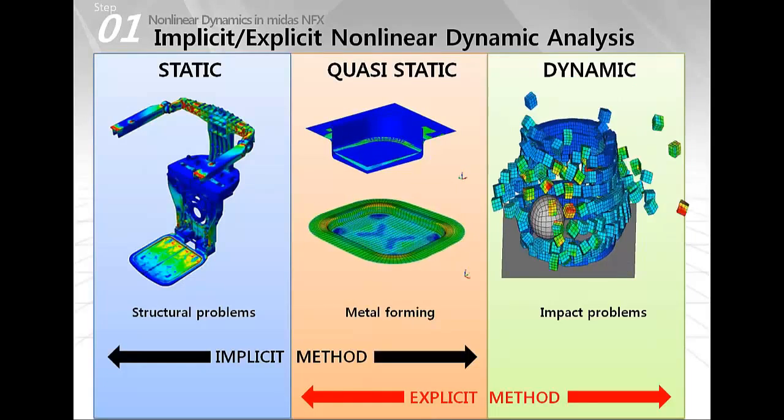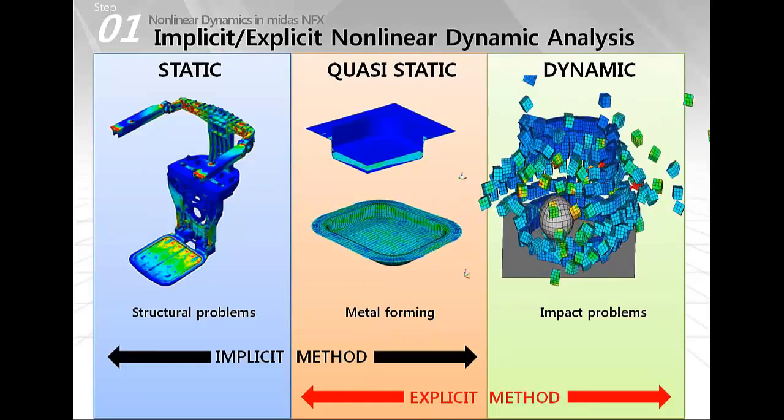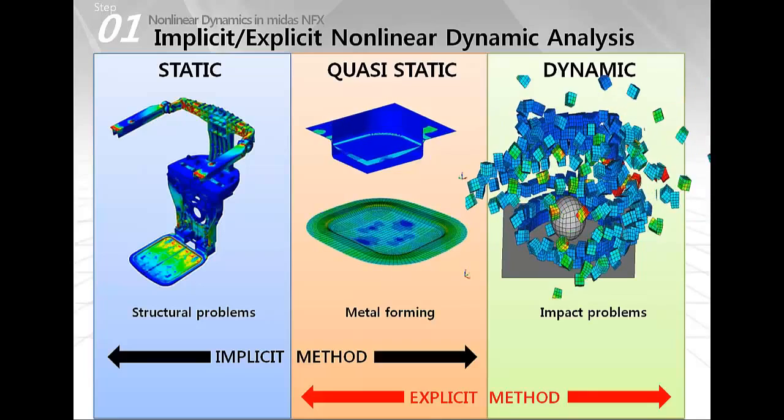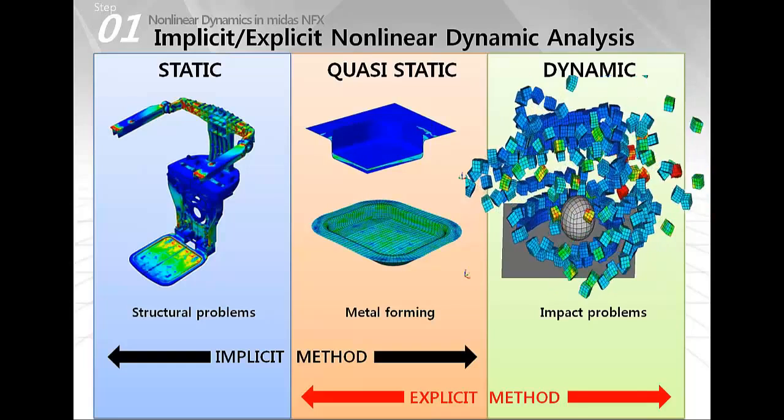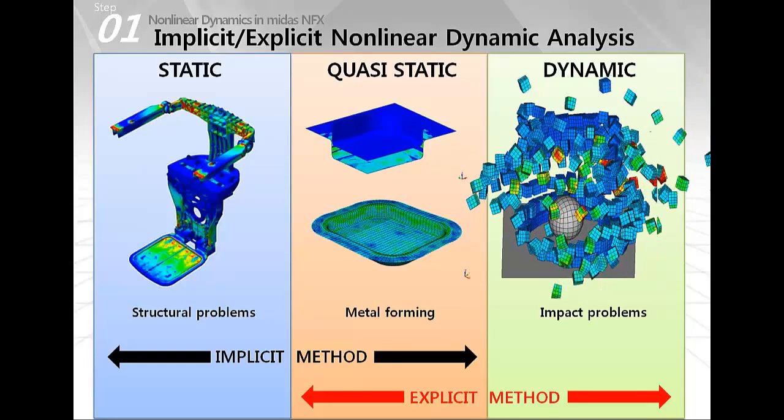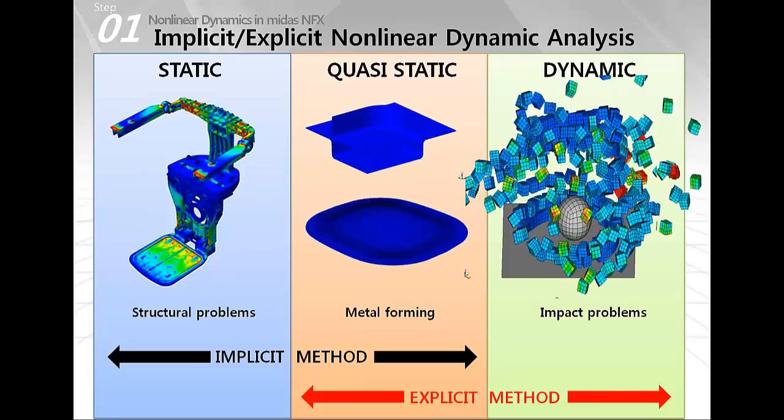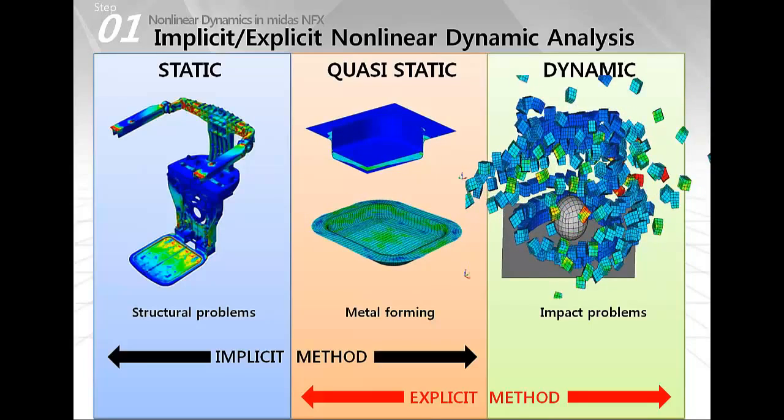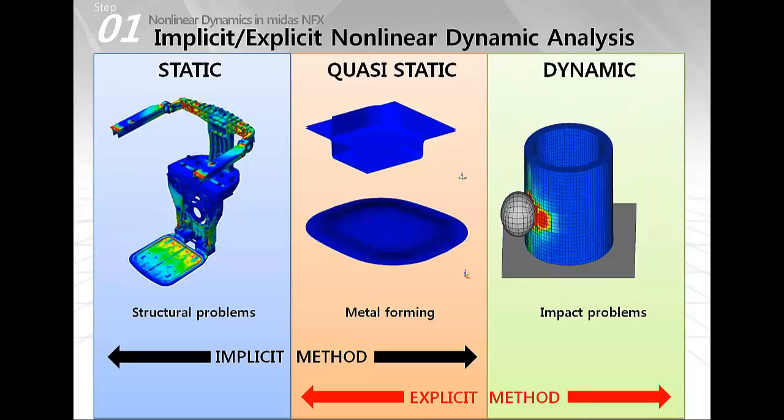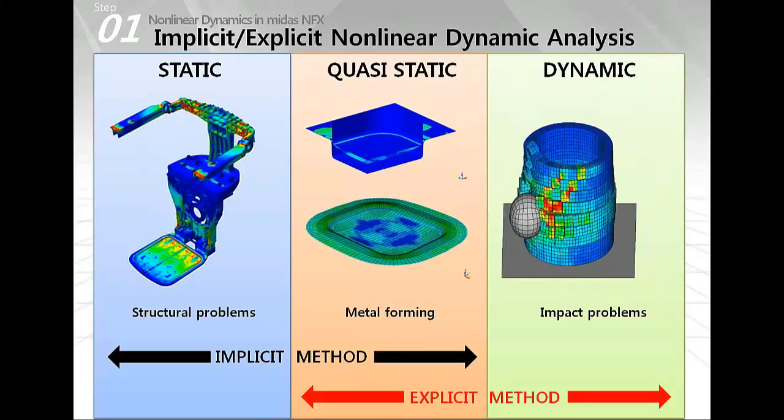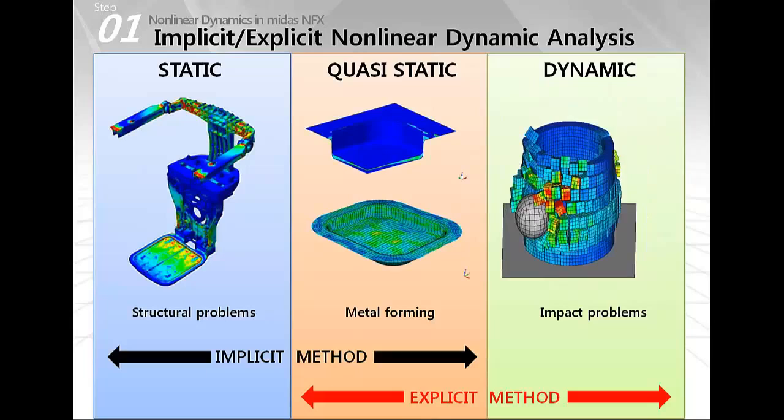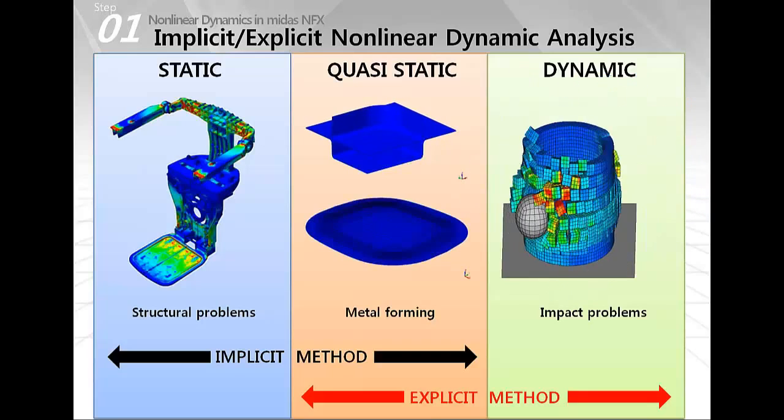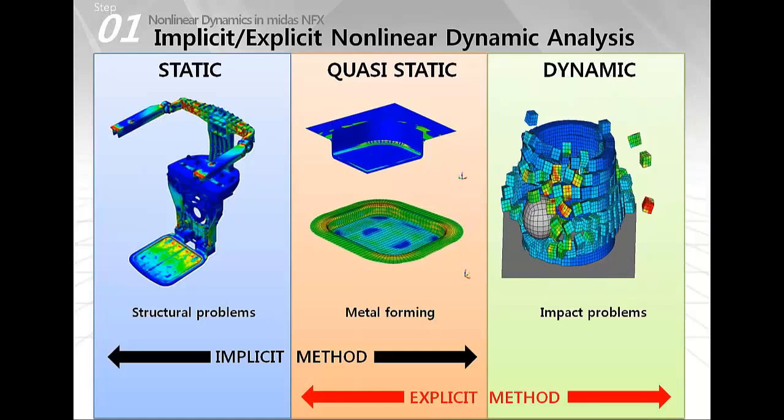So the next slide shows you the comparison between the implicit and explicit methods. So if you want to perform static analysis you will use implicit method but today we will handle dynamic problems. So this method as implicit will be more convenient to handle slow dynamic problems. For the high speed events, for the high speed dynamic problems like impact problems, explicit method will be the proper one. But if you want to analyze quasi-static simulations, actually you can use both methods. And in MIDAS-NFX there is a sequential nonlinear analysis capability and you can combine both of them to perform this quasi-static simulation.